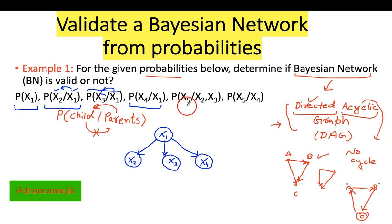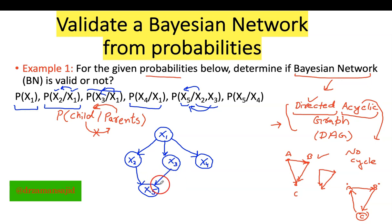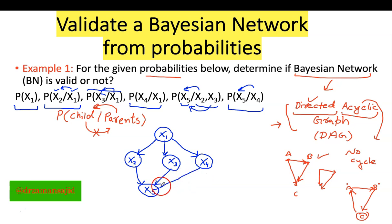Now a new variable is introduced: X5, whose parents are X2 and X3. So we have X2 and X3 as parents and X5 as the child. The direction comes from X2 to X5 and from X3 to X5. The last probability is P(X5 | X4) — X4 is the parent and it goes to the child node X5. We have now constructed our Bayesian network.